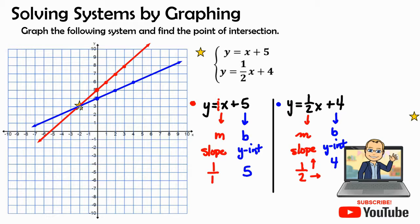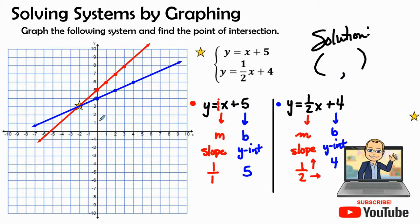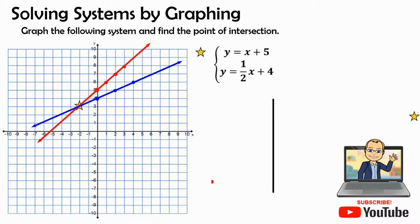Our point of intersection is right here. The solution is an ordered pair: from the origin we go to negative two on the x-axis, then up three on the y-axis. So our solution is negative two, three.